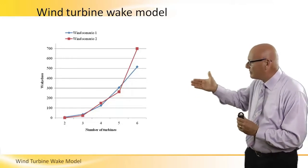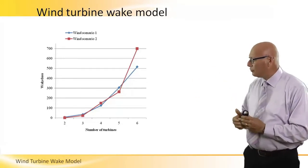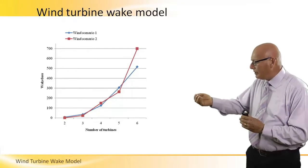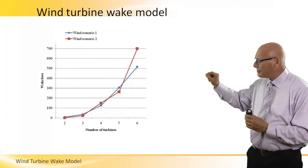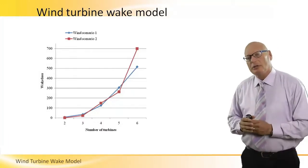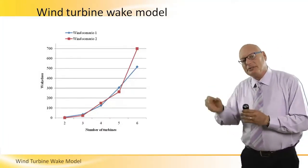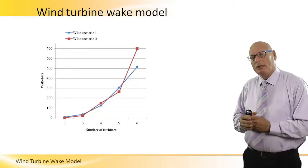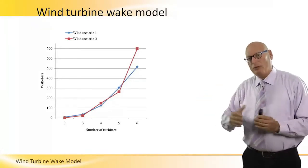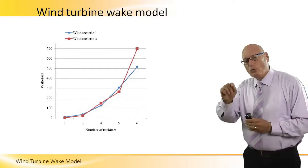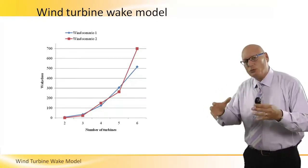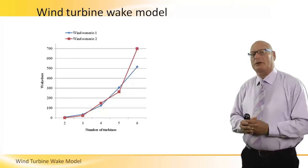So we have wind scenario one and wind scenario two, and as we increase the number of turbines, we take the worst case which is 700 meters. That will be 700 meters in this particular example between one turbine and another. So we always take the worst case when we have different winds coming into one particular park.